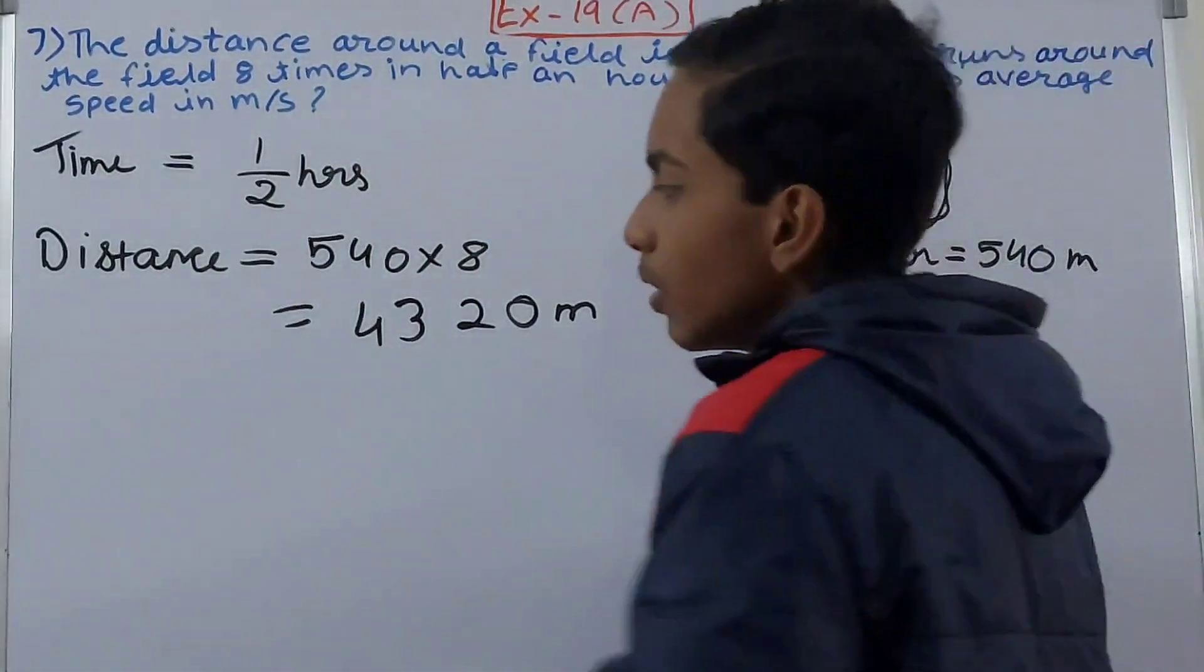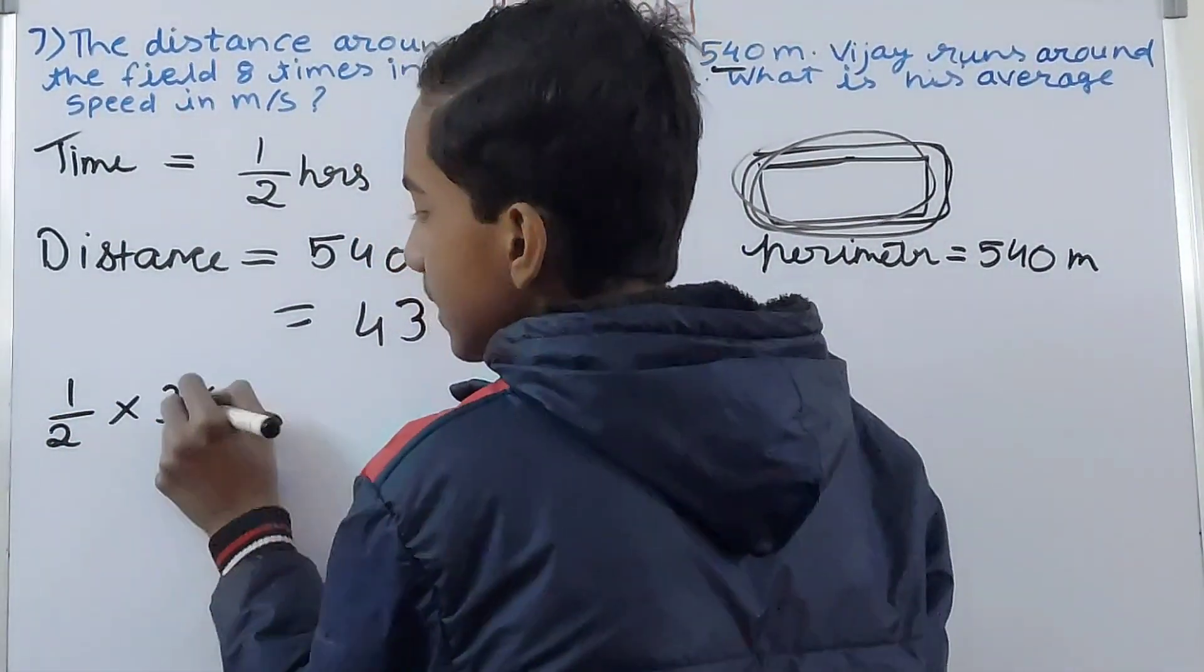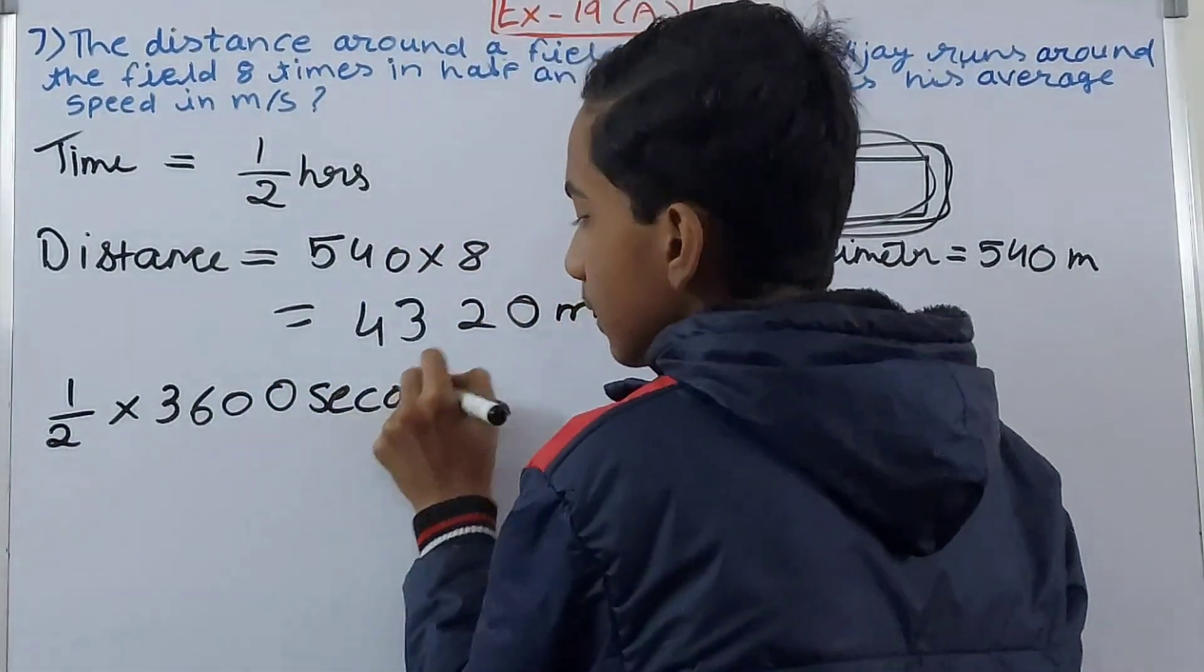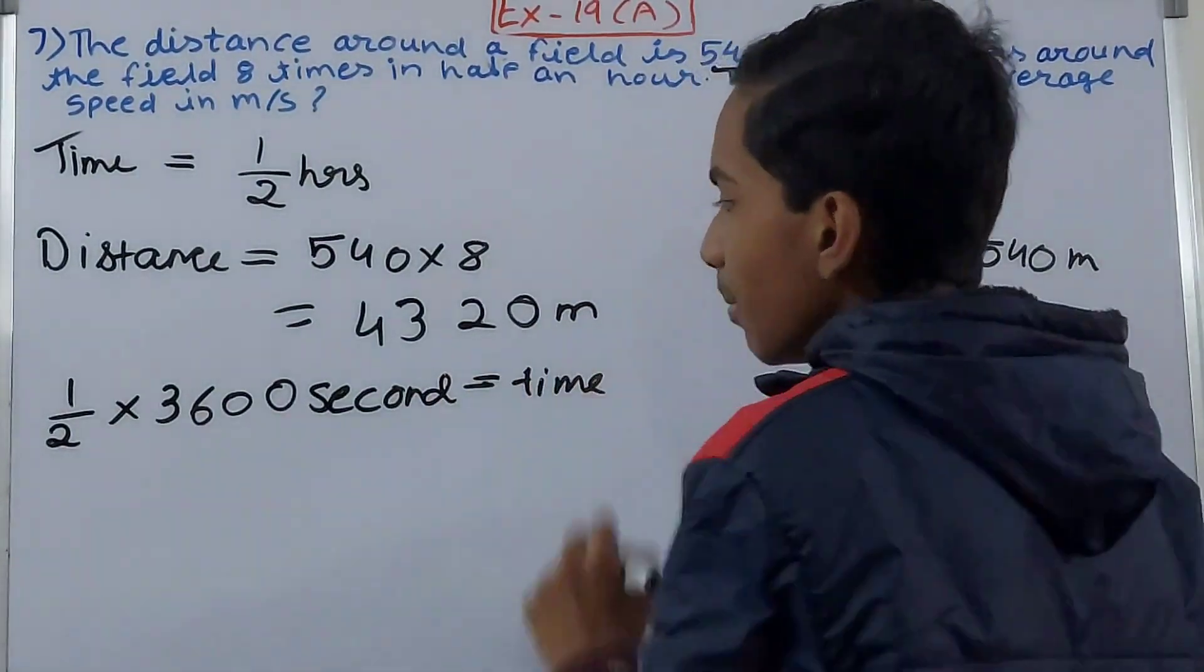So 1 by 2 into 3600 seconds - this equals to the time.